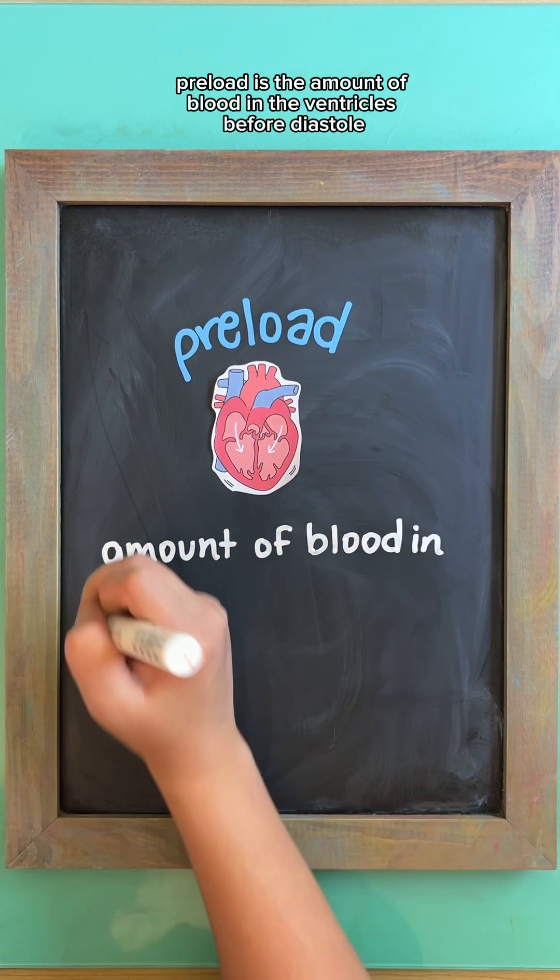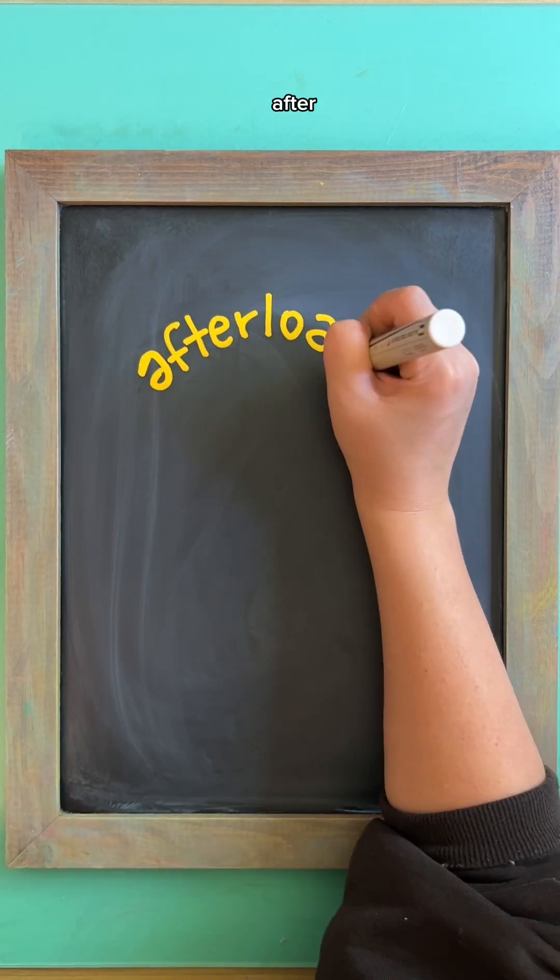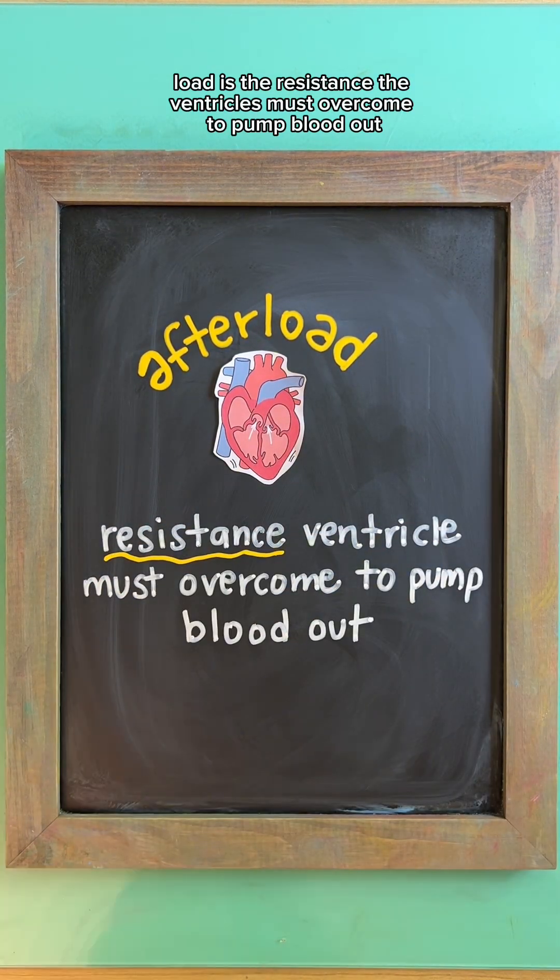Preload is the amount of blood in the ventricles before diastole. Afterload is the resistance the ventricles must overcome to pump blood out.